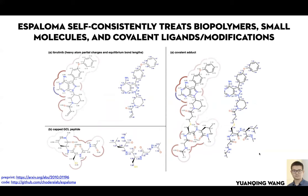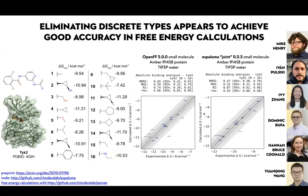Covalent ligands are now a breeze. If I have ibrutinib in its pre-reacted form — a covalent kinase inhibitor of BTK — it has a warhead that changes when it binds to cysteine. There's some rearrangement in charges and bonds right around the reactive group, but the rest of the molecule remains unperturbed. It doesn't do catastrophic things to your molecule. We can also self-consistently assign charges using the same kind of approach that was discussed in the keynote.